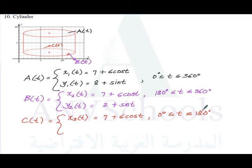And we have y₃(t). y₃(t) is equal to 2 plus sine t. This curve is variable from 0 to 360 degrees. So this is the equation of the parametric functions of the ellipses given in this cylinder.